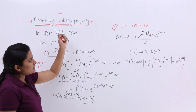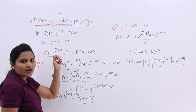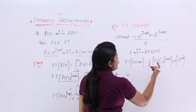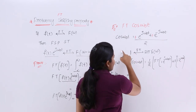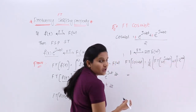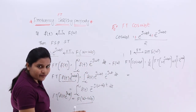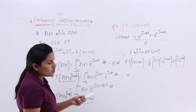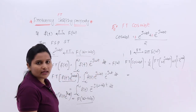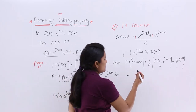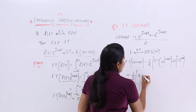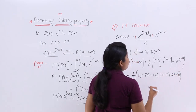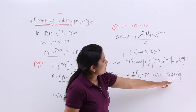If the Fourier transform of 1 is known, then 1·e^(jω₀t) can be handled by the frequency shifting property. In place of f(t) I am considering 1. So in 1's transform, you substitute the shifted frequency — you subtract that frequency. That means: (1/2)·[2π·δ(ω - ω₀) + 2π·δ(ω + ω₀)]. You can see ω + ω₀ and ω - ω₀ arise because I am applying this property directly.